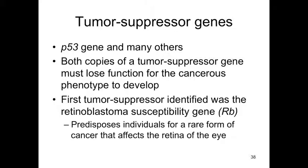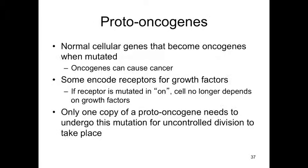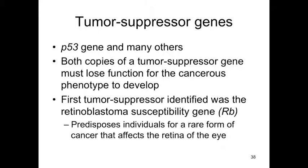In essence, proto-oncogenes are like stuck gas pedals — the cell cycle is just being pushed and pushed — while tumor suppressor genes are like broken brake pedals, so you cannot stop the cycle. That's the easiest way to keep straight what's going on.